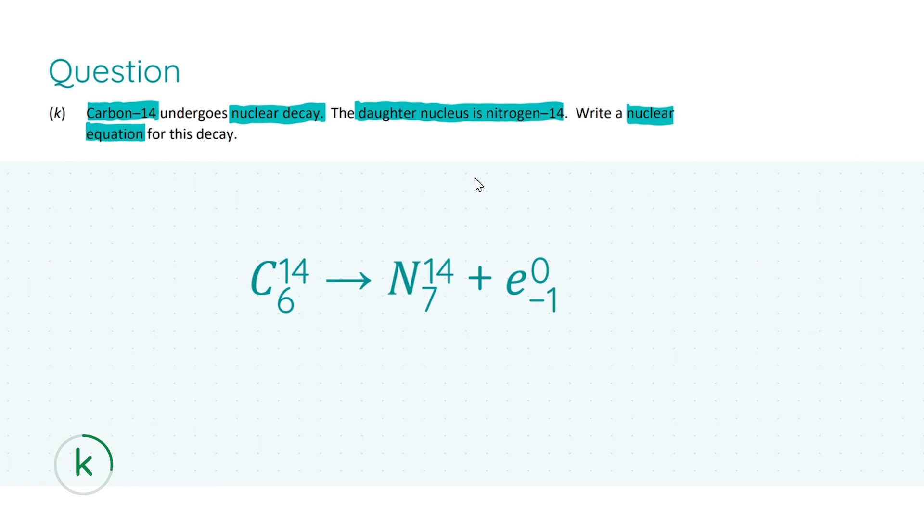We are told that carbon 14 which has six protons decays to nitrogen 14 plus something else. We have another thing here because we have to make sure that our protons, our atomic numbers, all sync up.